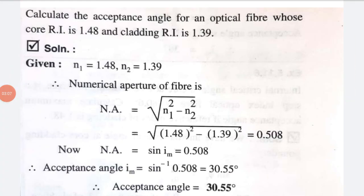Next numerical: Calculate the acceptance angle for an optical fiber whose core refractive index is 1.48 and cladding refractive index is 1.39. We have to find the acceptance angle. Given: N1 equals 1.48, N2 equals 1.39. Before finding the acceptance angle, we need the numerical aperture. Numerical aperture equals square root of N1 squared minus N2 squared — square root of 1.48 squared minus 1.39 squared — equals 0.508.